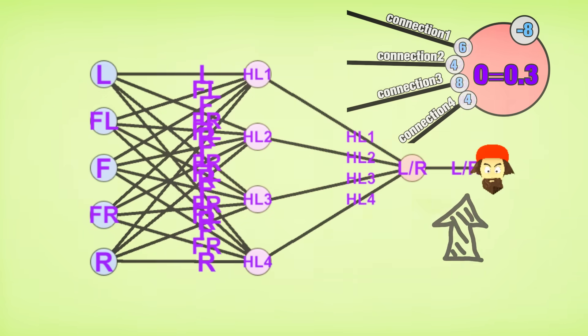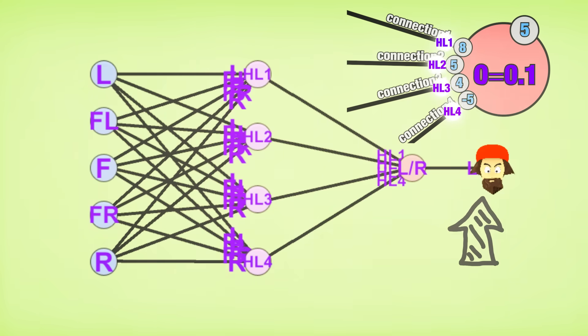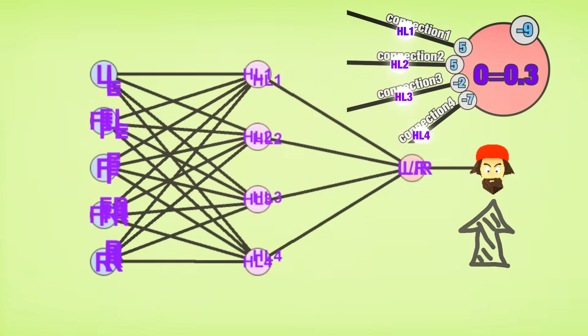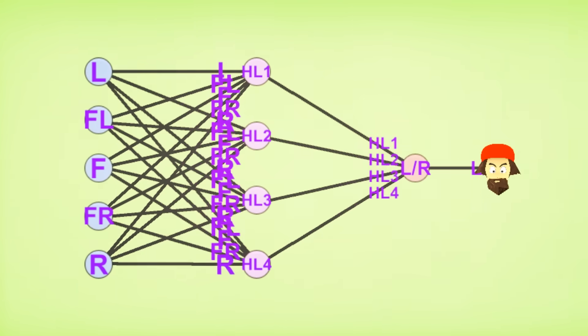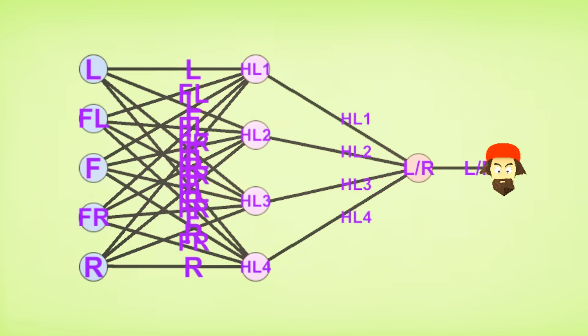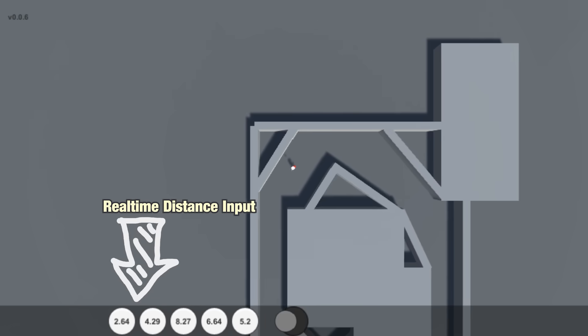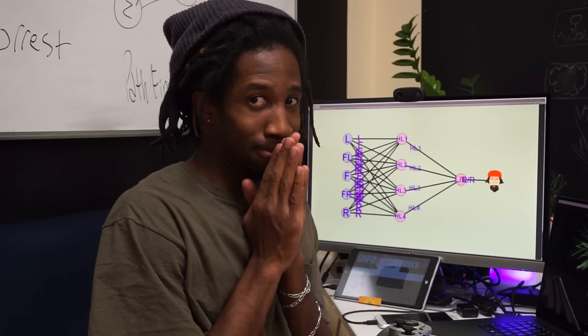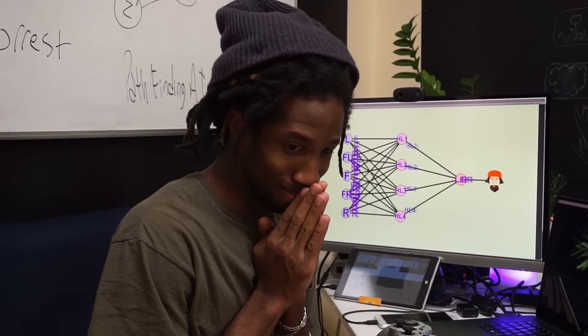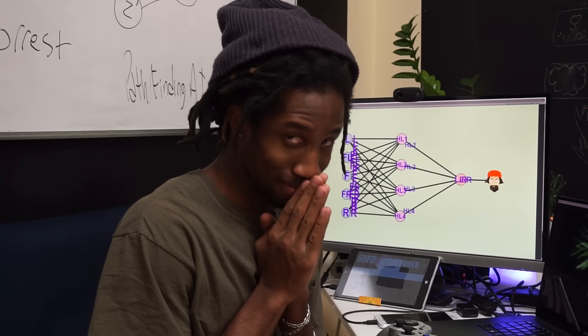And finally, the output node will be able to calculate a guess for Forrest to either tilt the joystick left or right. I know it's a lot to follow, just bear with me. It gets better, I promise. And this entire neural network calculation will happen over and over and over again in real time. Because Forrest's distance from the course will also change in real time. I hope I've explained this simply enough that you're still with me, because we are far from out of the woods.